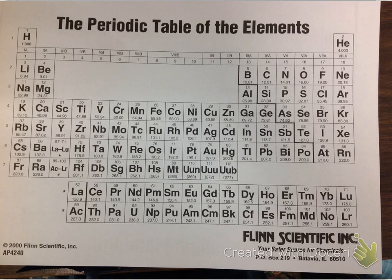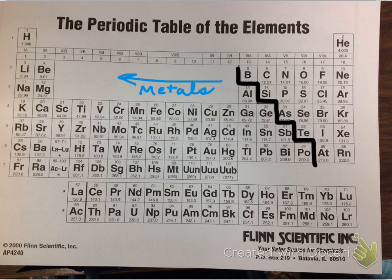We're going to start by first tracing a staircase beginning at element 5, boron. Call this the staircase. It separates metals to the left of the staircase. Any element found to the right of the staircase is a nonmetal.